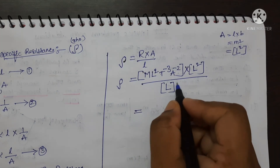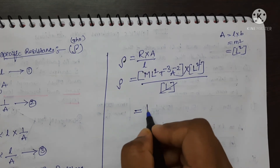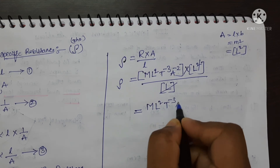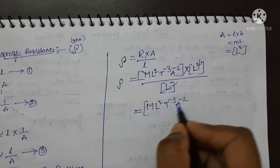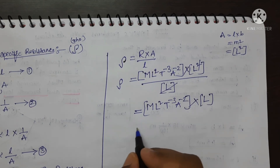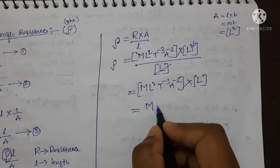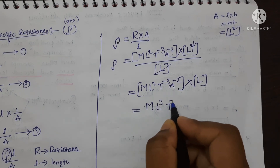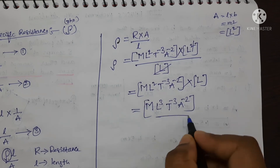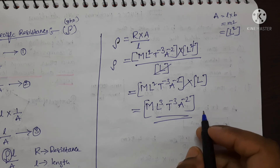Simplifying the equation, one L from A (L squared) and the L in the denominator cancel. The remaining terms are M, L squared, T to the power minus 3, A to the power minus 2, multiplied by L. Further simplifying: L squared and L gives L cubed, so the final dimensional formula for resistivity is M L cubed T to the power minus 3 A to the power minus 2.